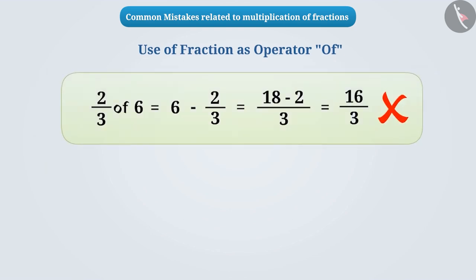It is important to understand that whenever we use the operator of, it means we have to multiply. Hence, here we do 2 by 3 into 6, which will result in 4.